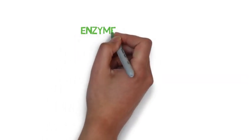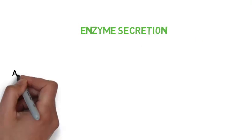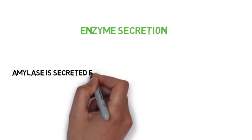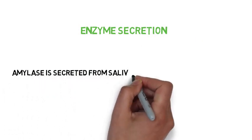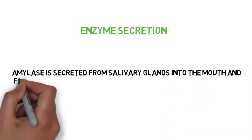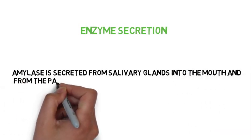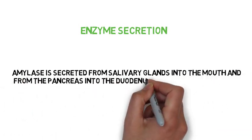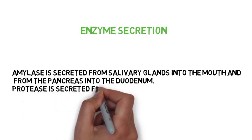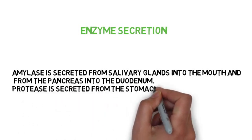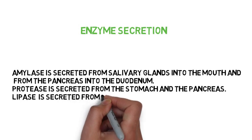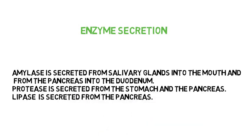Enzyme secretion. Amylase is secreted from salivary glands into the mouth and from the pancreas into the duodenum. Protease is secreted from the stomach and the pancreas. Lipase is secreted from the pancreas.